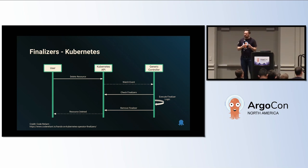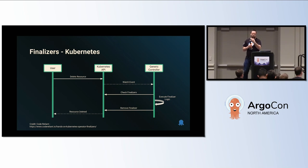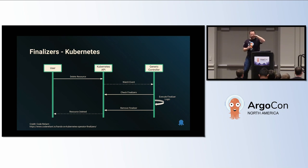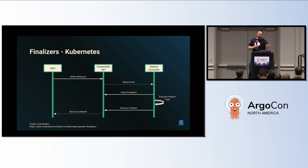In generic Kubernetes, a user deletes a resource, the Kubernetes API sends a watch event to the controller that owns the finalizer — for example Longhorn for storage volumes, or Argo CD. The controller executes some logic, and when it's done, removes the finalizer. Once that finalizer is removed, Kubernetes actually deletes the resource. Pretty straightforward.